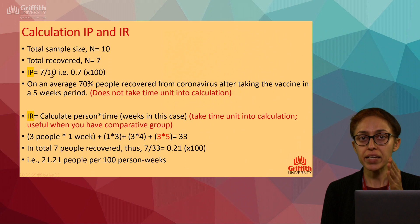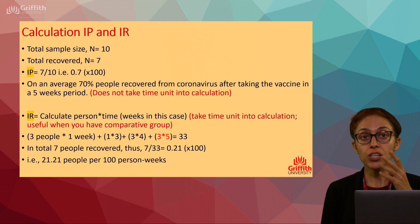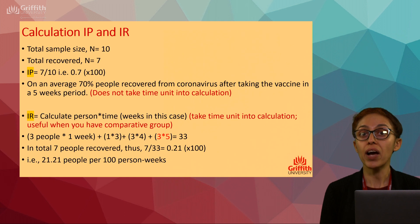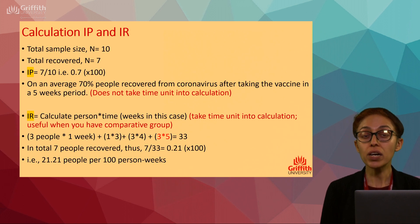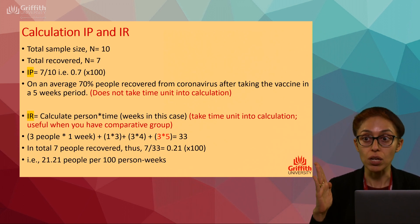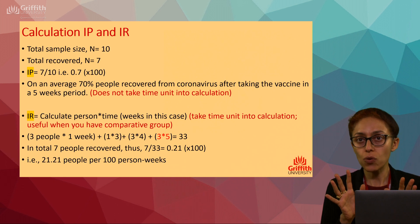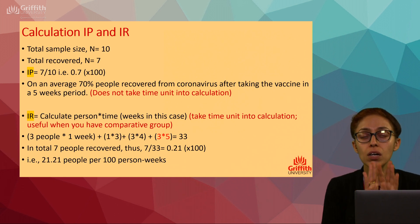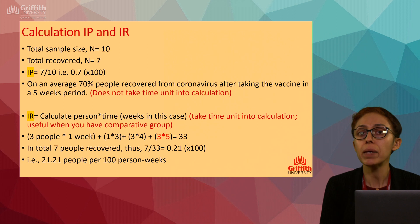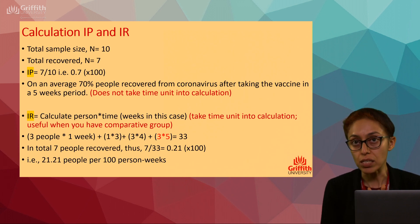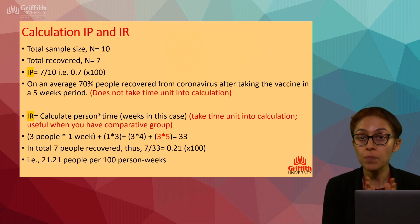Multiply by 100 to express as a percentage: 70%. You can say on average 70% of people recovered from coronavirus after taking the vaccine in a five-week period. Incidence proportion does not take the rate of recovery over time into consideration — it is just a quick overall snapshot.